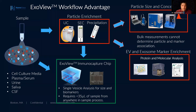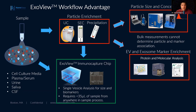The arrow goes from the particle enrichment step straight into the ExoView capture chip. The particles interact with the capture spots in liquid suspended over the chip. This provides single vesicle analysis for size and biomarkers, and requires a very small amount of sample. You can use particle-enriched isolates, or the whole sample — cell culture media, serum, urine, saliva — you don't need to do the particle enrichment. The ExoView chip brings together particle size, concentration, and EV biomarker data simultaneously, directly detecting single EVs on the immunocapture chip.